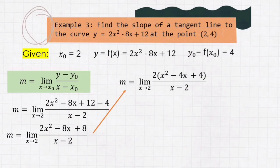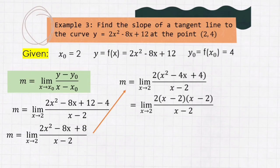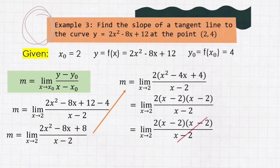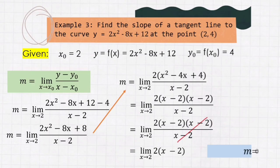2x² ÷ 2 = x², −8x ÷ 2 = −4x, and 8 ÷ 2 = 4. After this, we can factor x² − 4x + 4 to get m = limit of 2(x − 2)(x − 2) / (x − 2) as x approaches 2. We can cancel out (x − 2) in the numerator and denominator, giving m = limit of 2(x − 2) as x approaches 2. Substituting x = 2: 2 − 2 = 0 and 2 × 0 = 0, so our final answer is m = 0.